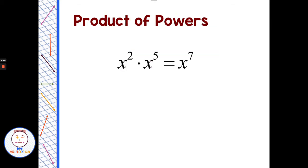Let's look at that with some different examples. x squared times x to the fifth — we're multiplying and have the same base, so I add 2 and 5 to get x to the seventh. That makes sense because x squared is x times x, and x to the fifth is x times x times x times x times x, so together we're multiplying x seven times. This same rule works whether we have a variable, a positive number, or a negative number — if we're multiplying and have the same base, we add the exponents.